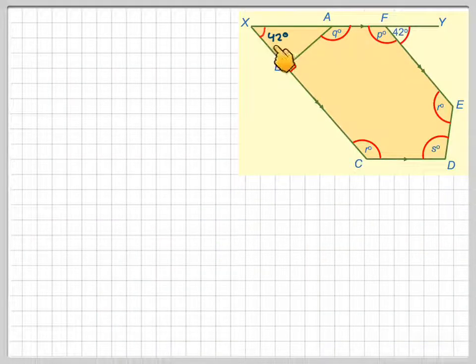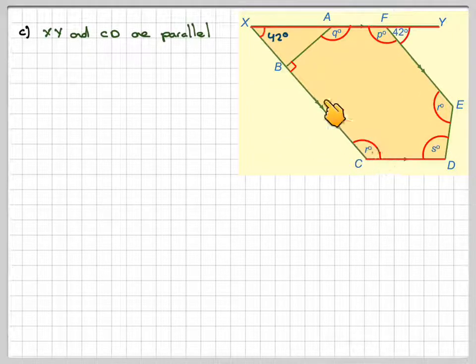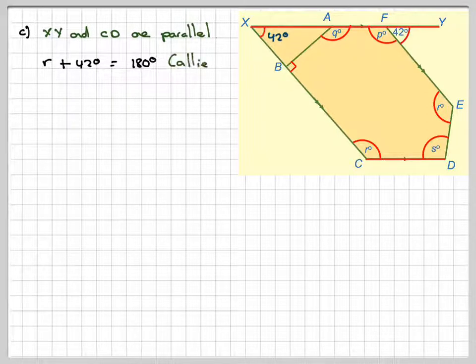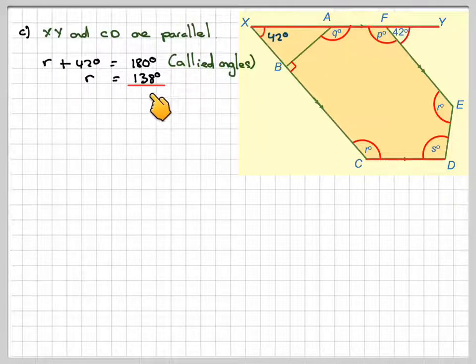We know this is 42, but we also know that this line here is parallel to this line here. Looking at these two angles R and 42, R plus 42 must be equal to 180 because these two are allied angles on parallel lines. Therefore, R will be equal to 138.